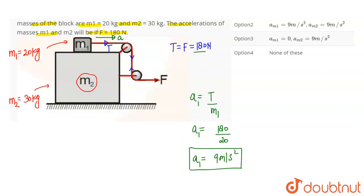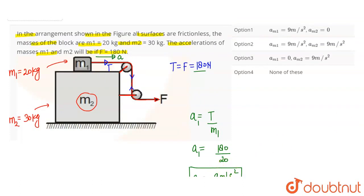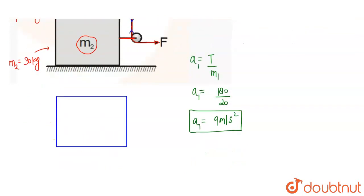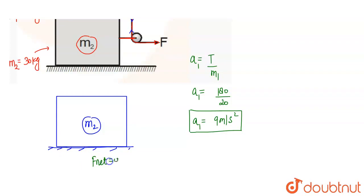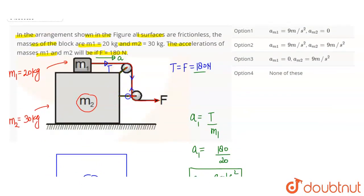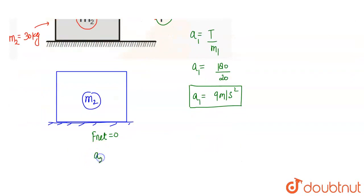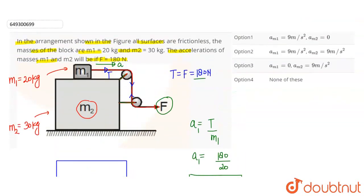Block m1 is moving on top of m2 with acceleration 9 m/s². Now looking at block m2's free body diagram, no force is acting on it directly — the only force was tension, which acted on block m1, causing it to slide. The net force on block m2 is 0, because the two pulleys were connected to the rigid end, so no tension transfers to m2. Therefore, the acceleration of block m2 is also 0. So the answer is: acceleration of m1 = 9 m/s², acceleration of m2 = 0, which corresponds to option number 1.